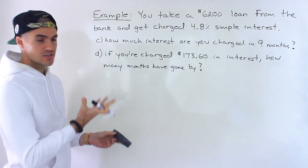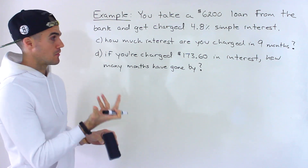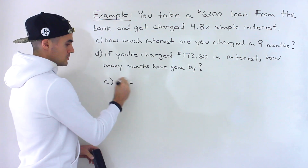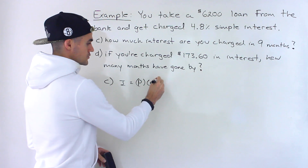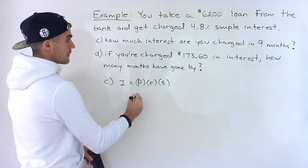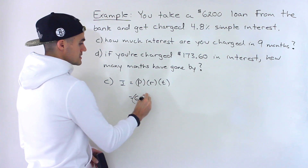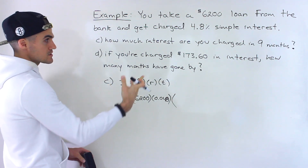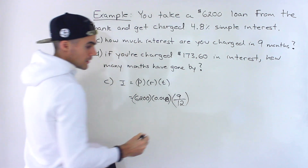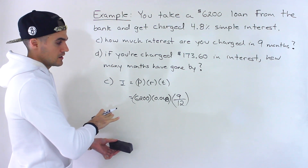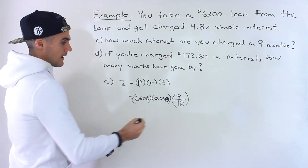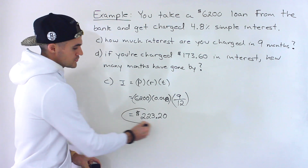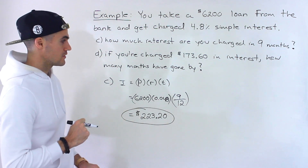Moving on to Parts C and D, very similar to A and B, but now in terms of months. Part C: how much interest are you charged in nine months? We use the same formula — principal times simple interest rate times number of years — but now we prorate using 9 over 12 because there are 12 months in a year. Before it was 80 over 365; now it's 9 over 12. When you do that calculation, you get $223.20 in interest.